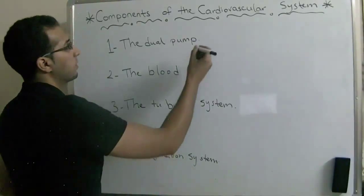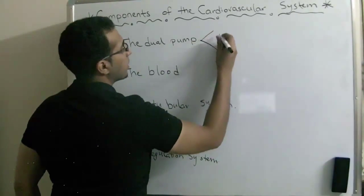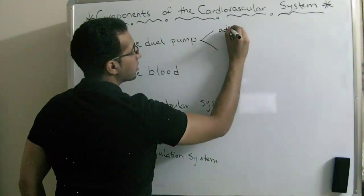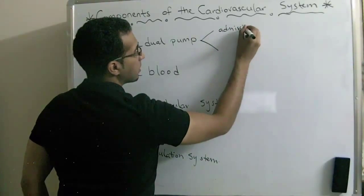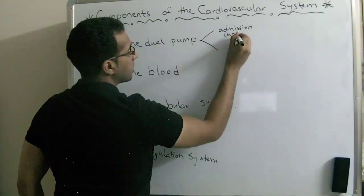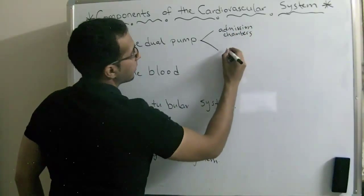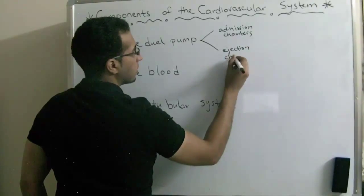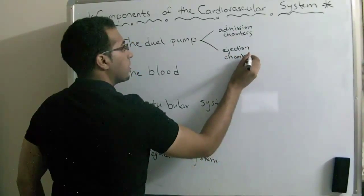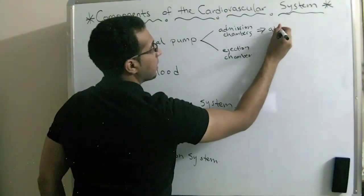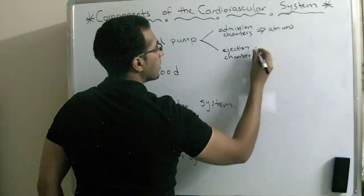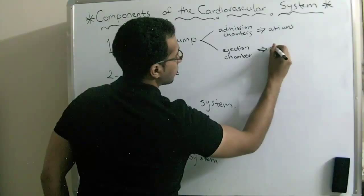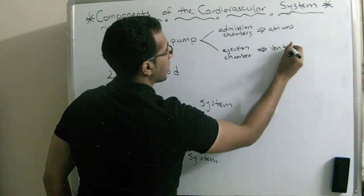For the dual pump it's divided into two parts. The admission chambers which are the atriums and the ejection chambers which are the ventricles.